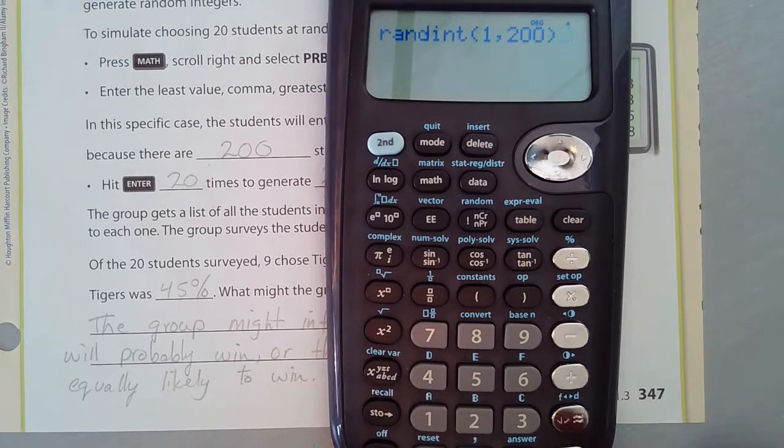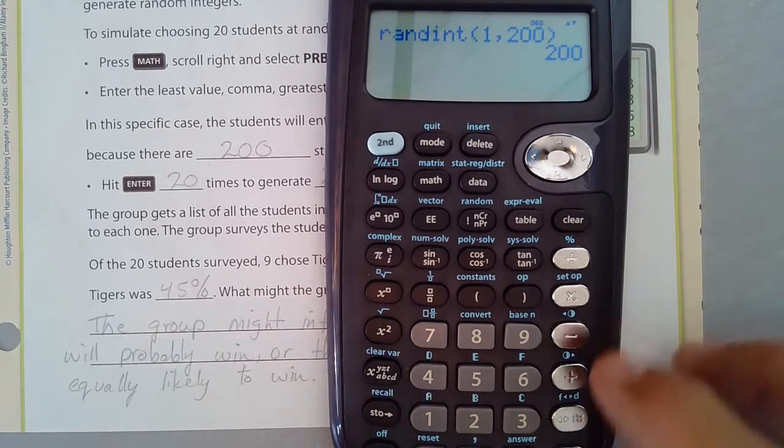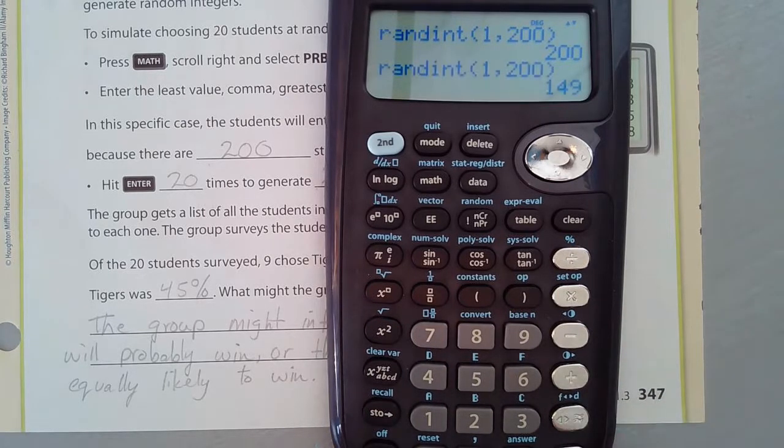It gives me 200. Okay, that's kind of strange. Let's try it again. I just hit enter and it does it again. 149. I could do it again and the advantage of this is I can just get random numbers from 1 to 200 at the push of a button over and over again.